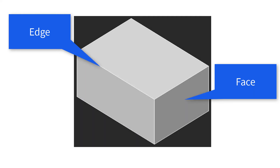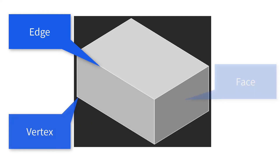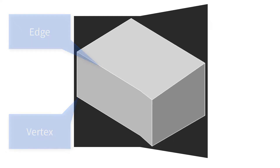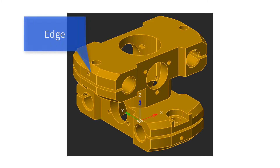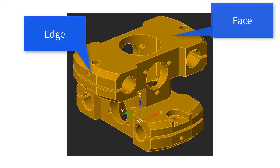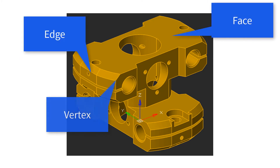At the intersection of edges is the vertex — that's the point where three edges come together. Even complex 3D models are made of exactly the same things: edges, faces, and vertices.